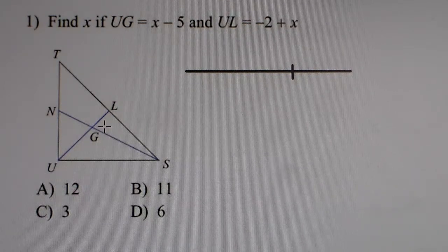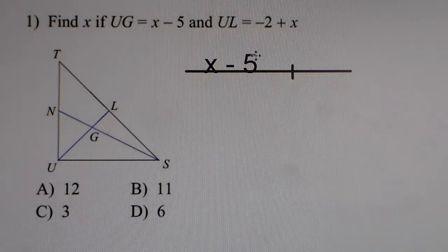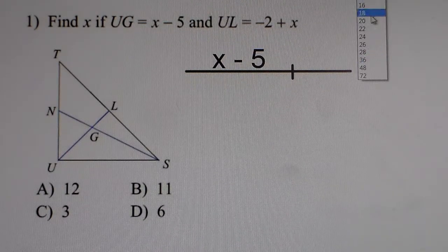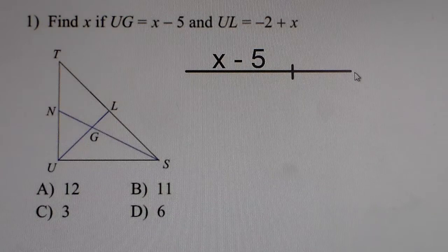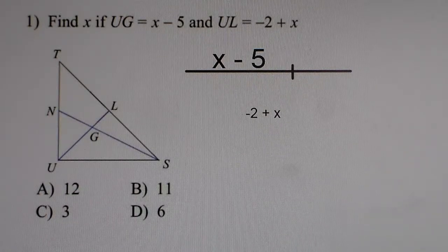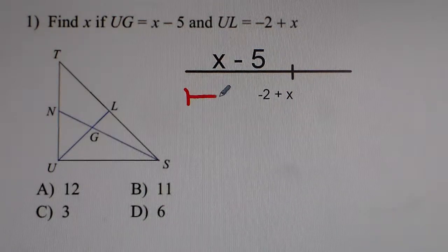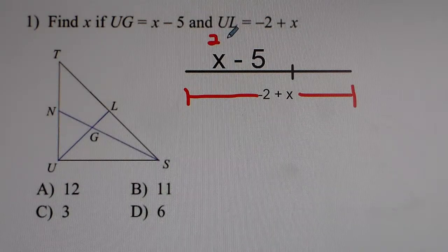So the 2-thirds piece — UG — is the bigger piece of the altitude. The bigger piece of x minus 5 goes right there. UL is the entire thing, all the way from the left to the right, so that would be negative 2 plus x. We've got to find the 1-third piece.